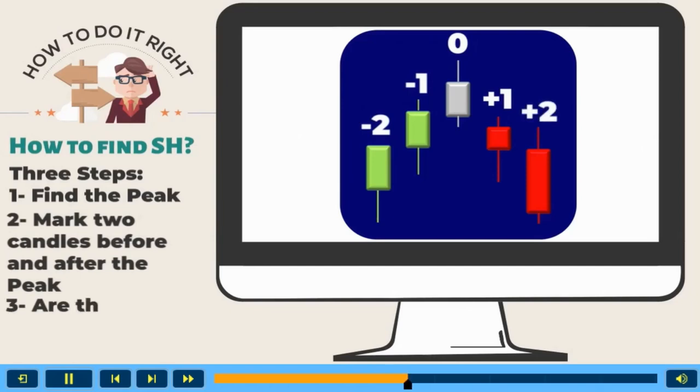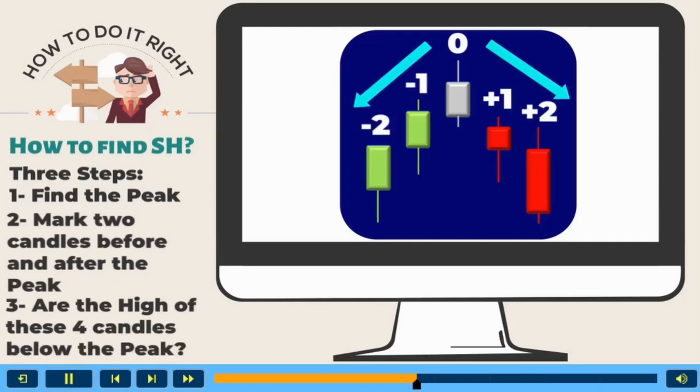Step 3, if the high of these four candles are sequentially lower than the high of zero peak candle, you have identified a standard swing high.